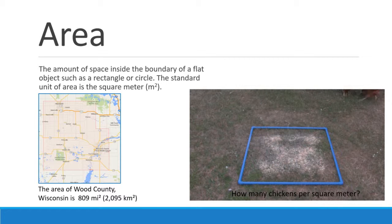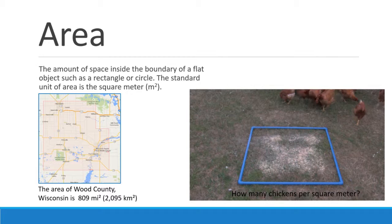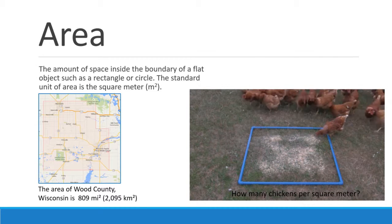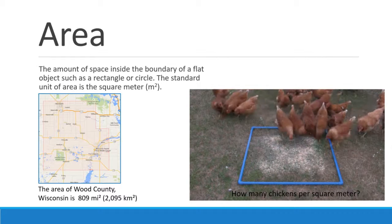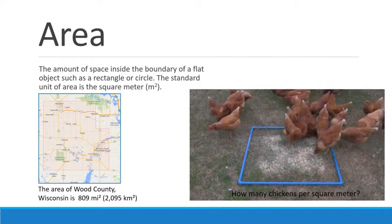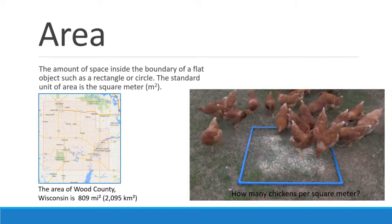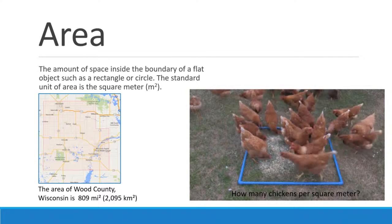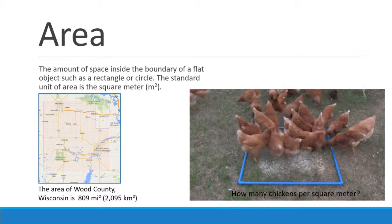Area, on the other hand, is the space inside a boundary. The blue shape that you see on the screen is one square meter. While I'm talking to you, you can see if you can figure out how many chickens fit in one square meter — a little difficult because they keep moving.